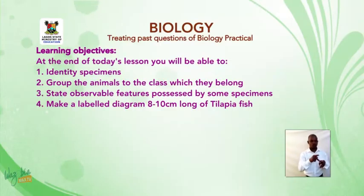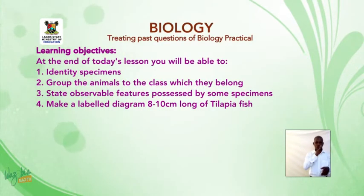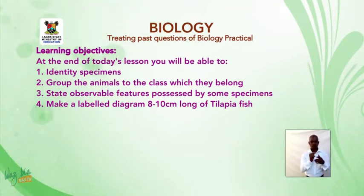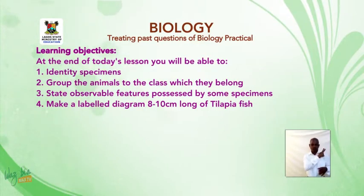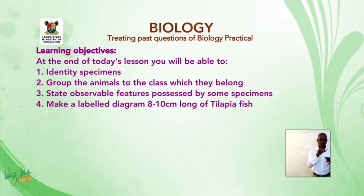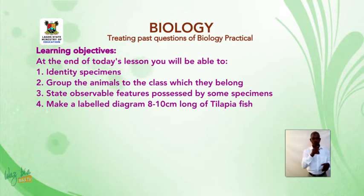Learning objectives: at the end of today's lesson, you will be able to identify specimens, group the animals to the class which they belong, state observable features possessed by some specimens, and make a labelled diagram 8 to 10 cm long of tilapia fish.